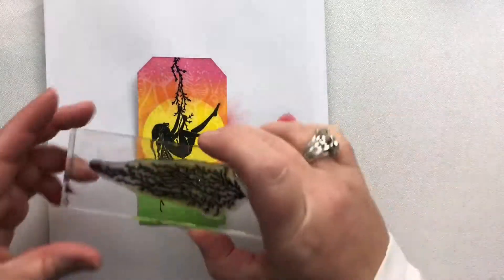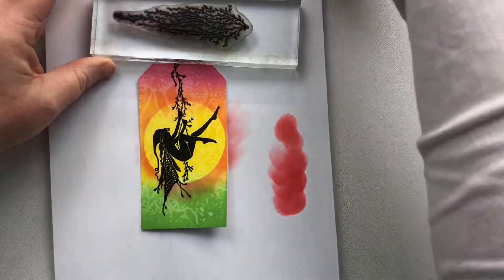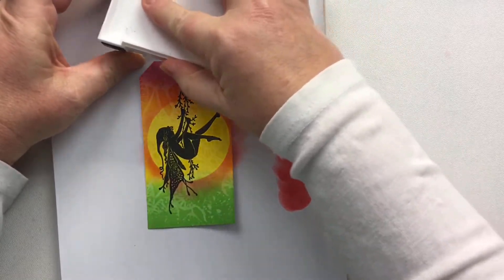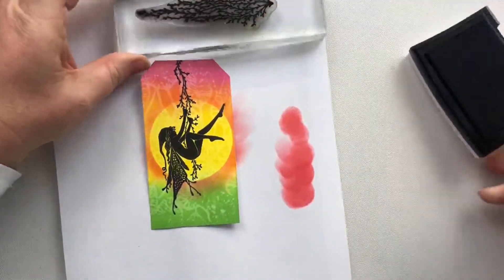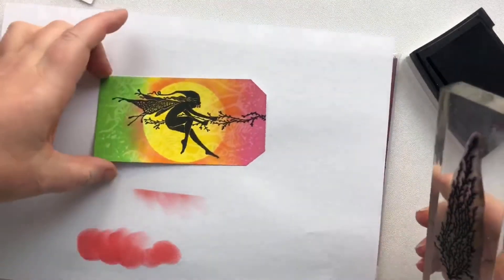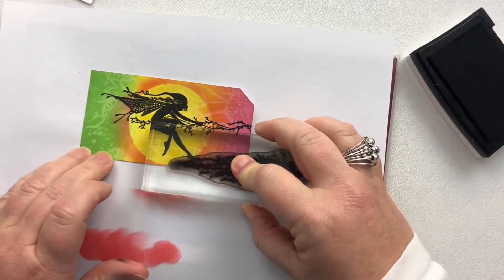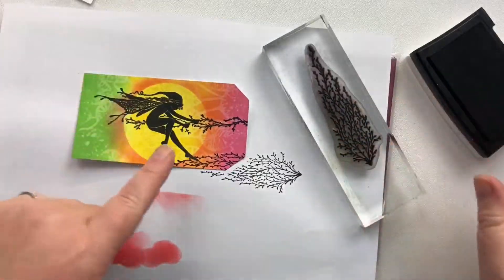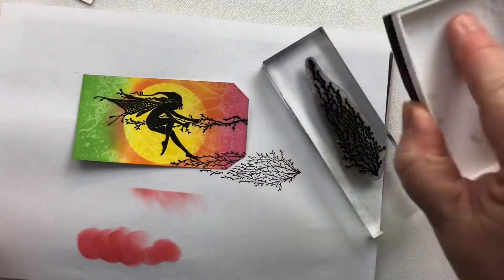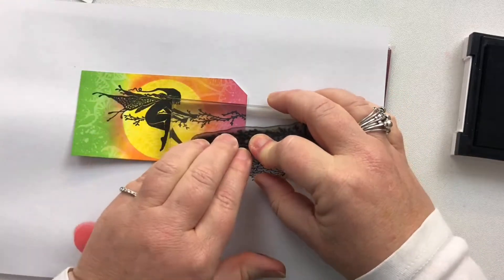And then I'm going to take Spanish moss. What a fabulous stamp this is and I'm going to ink it up with my black. I'm going to start on the one edge and allow them to drape all the way down. And then I'm going to alternate the heights of this.